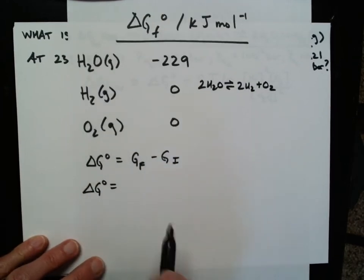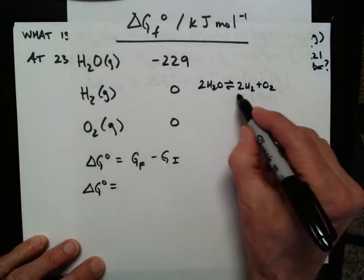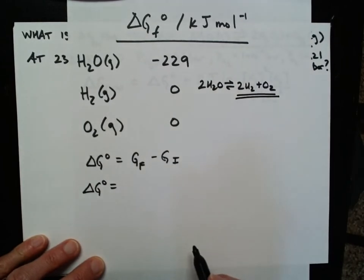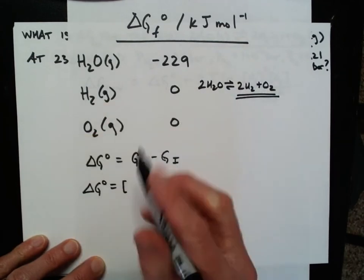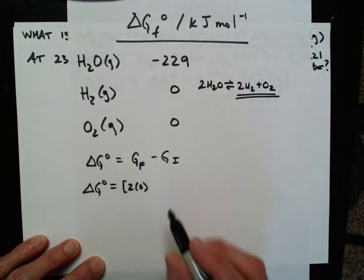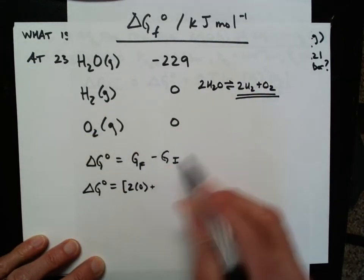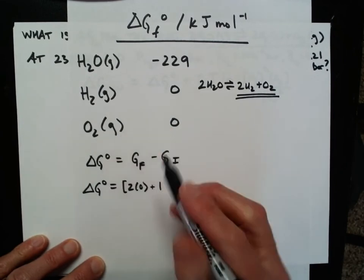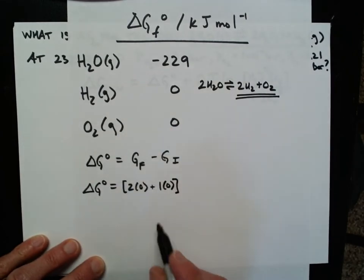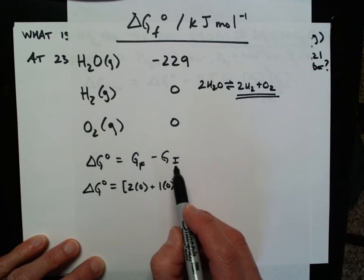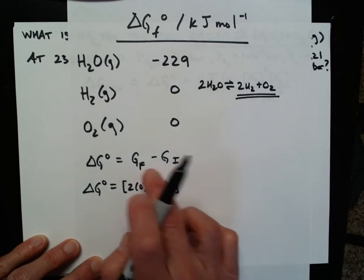Well, the delta G under final conditions, that's going to be these two over here. So I need to take 2 times the value for hydrogen, which is twice times 0. That's easy. And I need to add to that 1 times the value for oxygen, which is also 0. That's a pretty easy calculation. The whole thing goes to 0. So that's my final conditions.